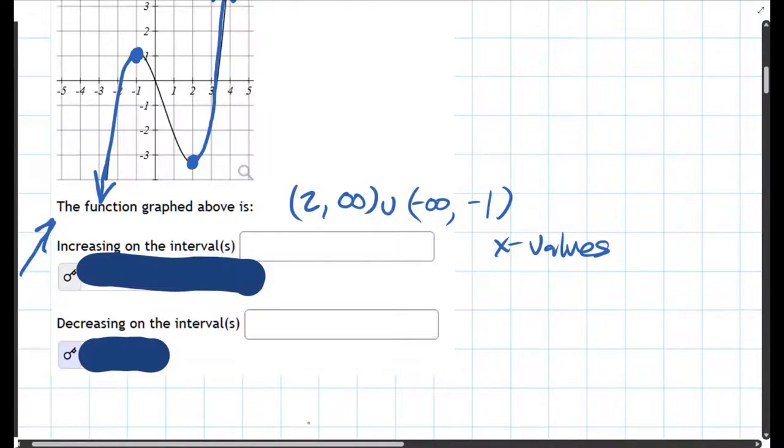Now normally I'd write the order in reverse, I'd write it as negative infinity, negative 1, union 2 to positive infinity. Write them in order, the small one on the left, big one on the right, but it's not wrong if you write them in the other order.